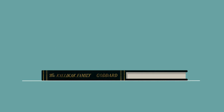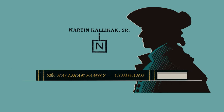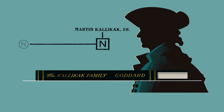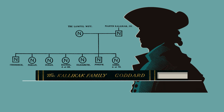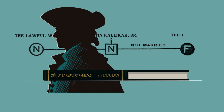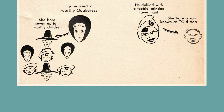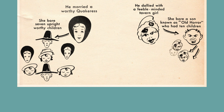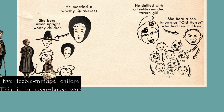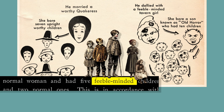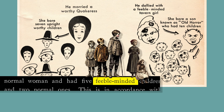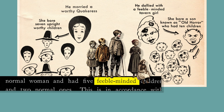Goddard wrote a book based on the story of Martin Kalikak, a soldier who was married and had a family of fine, upstanding citizens. But according to the book, Martin Kalikak had a one-night stand with a feeble-minded barmaid. She had a son who became known as Old Horror, who went on to father ten children. According to Goddard, feeble-mindedness was hereditary, and the family was full of what he called the lowest types of human beings.